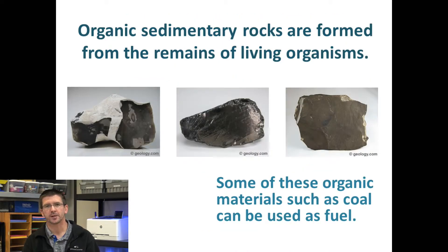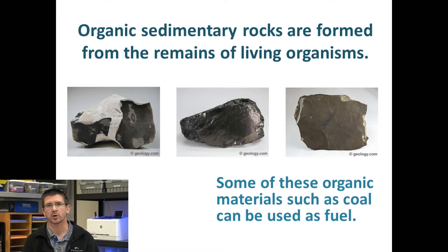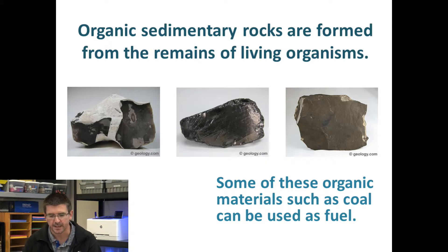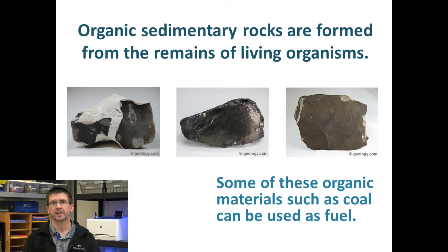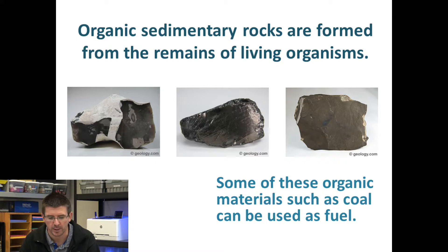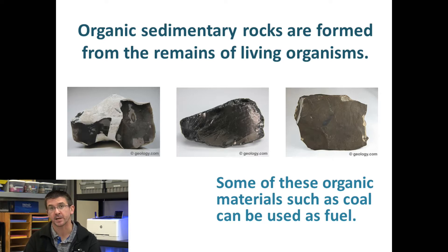The last category of sedimentary rocks are organic sedimentary rocks. Anytime we talk about something organic, we're talking about something that came from the remains of a living thing. So organic sedimentary rocks are formed from the remains of living organisms. Things like coal and flint are formed from remains of plants and animals. Over time, these decompose, solidify, and form organic sedimentary rocks. Organic sedimentary rocks can often be used as fuel — things like coal and flint can be used to start a fire. Oil, even though it's not a rock because it's usually in liquid form, is formed through this same process.